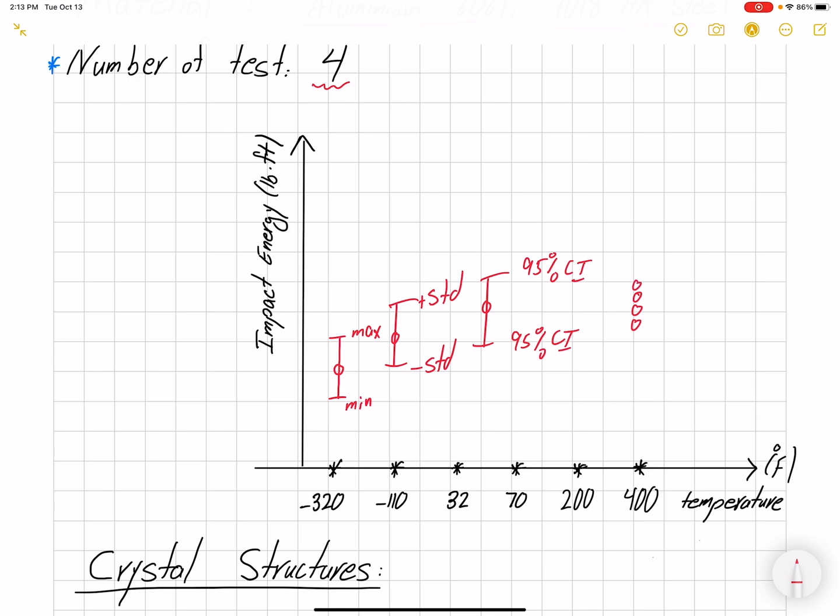Both Excel and MATLAB have functions to plot error bars. We are going to plot our data as a function of temperature, connecting the average values. We are hoping to see a trend. One objective of this lab is to find the ductile-brittle transition.